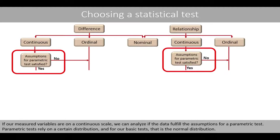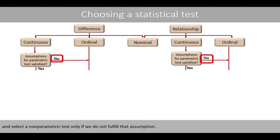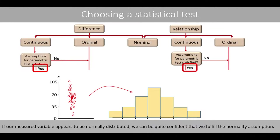If our measured variables are on a continuous scale, we can analyze if the data have fulfilled the assumptions for a parametric test. Parametric tests rely on a certain distribution, and for our basic tests this is the normal distribution. Since parametric tests generally have a higher statistical power than non-parametric tests, we should select a parametric test if we fulfill the assumption of normality, and select a non-parametric test only if we do not fulfill that assumption. If our measured variable appears to be normally distributed, we can be quite confident that we fulfill the normality assumption.